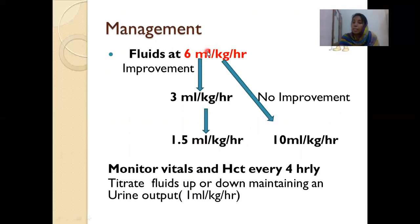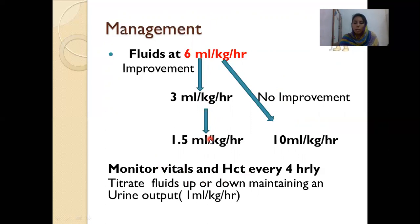Once the child starts improving, shift down the fluids to 3 mL per kg per hour, then to 1.5 mL per kg per hour. If the child is not improving, shift up fluids to 10 mL per kg per hour. All decisions are dependent on vitals, hematocrit, and urine output. Monitor vitals and hematocrit every 4 hours. Always maintain urine output of 1 mL per kg per hour. In dengue with warning signs, starting fluid is 6 mL per kg per hour.